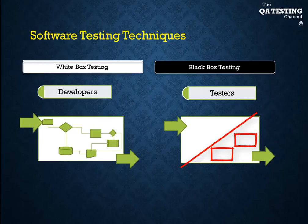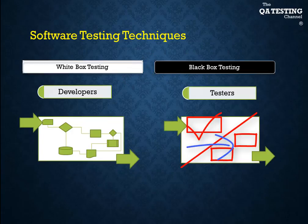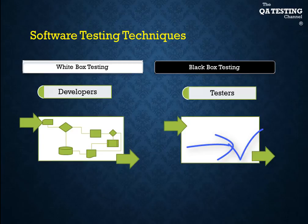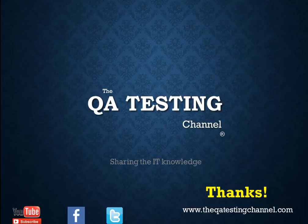Grey box testing is a mix of white and black box testing techniques. One basic example: we do a transaction in a system front-end, then we validate that this transaction is also registered in the database.